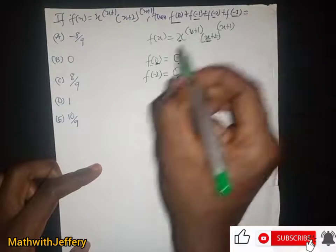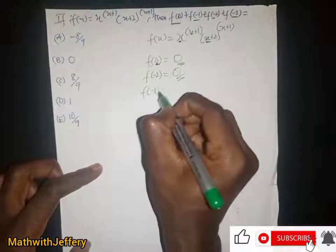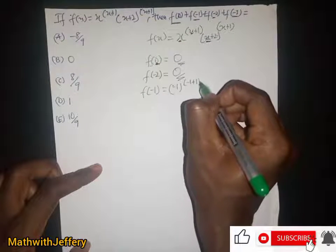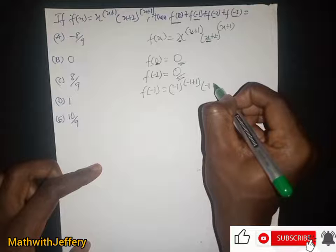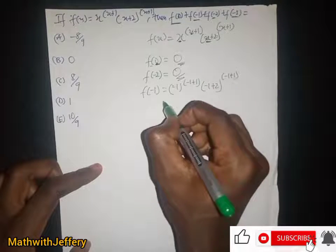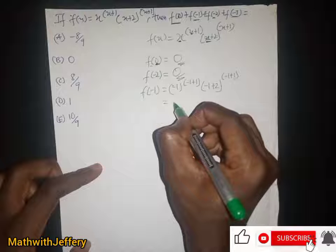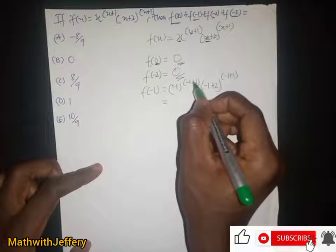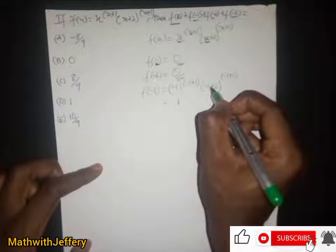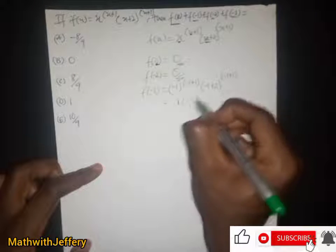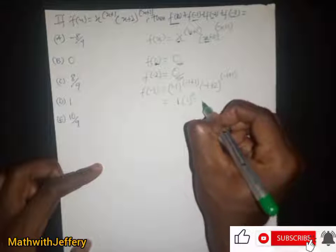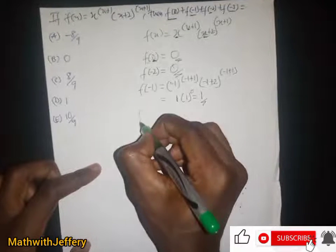Now f(-1): we have negative 1 to the power (-1+1), which is negative 1 to the power 0. Then we have (-1+2) to the power (-1+1), which is 1 to the power 0. Any number raised to the power 0 is 1, multiplied by 1. So f(-1) = 1.